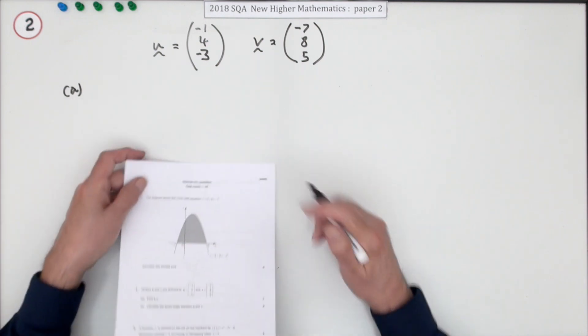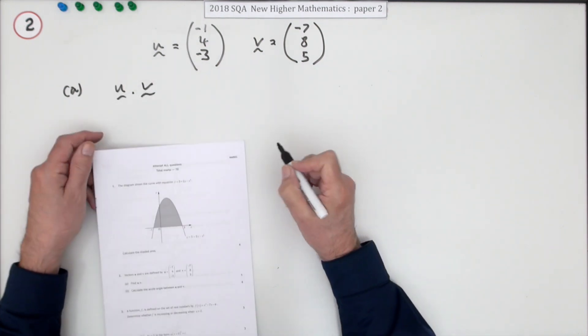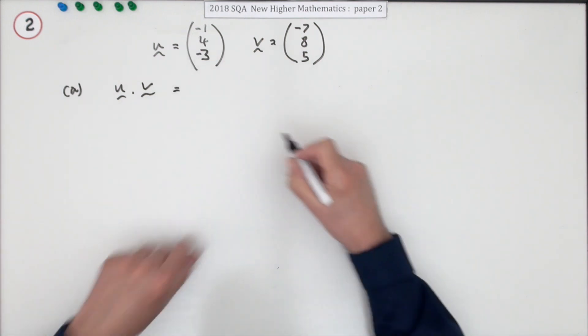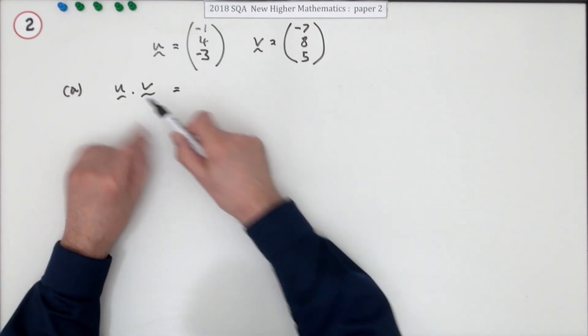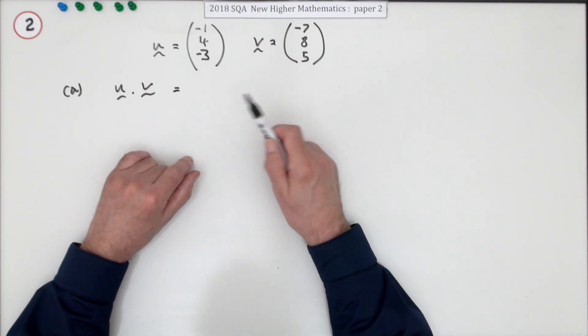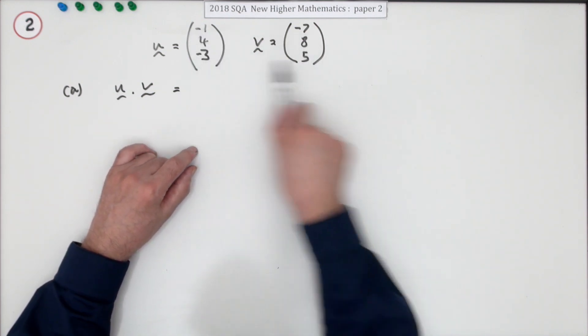It says find u dot v - what's the scalar product of u and v for one mark? Well, to do that it's scalar multiplication. The answer will just be a single number, so you multiply the corresponding components but you add them up, you don't leave them separate.